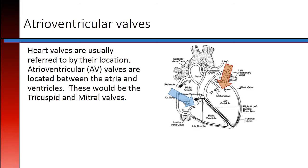Heart valves are usually referred to by their location. Atrioventricular, or AV valves, are located between the atria and ventricles. These would be the tricuspid and mitral valves.